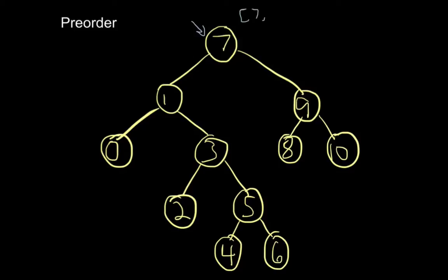Because we're traversing in pre-order, the next step is to move to the left. We move to this node with value 1 and put it in the array. From there, we go further down to the left, get node 0, and put that in the array.